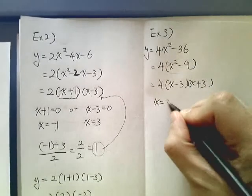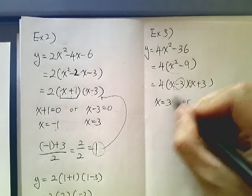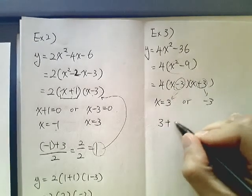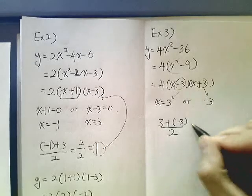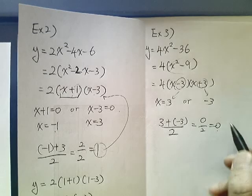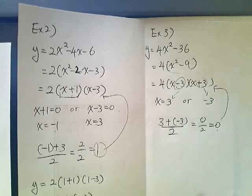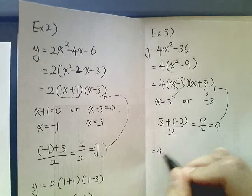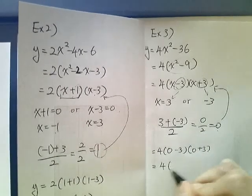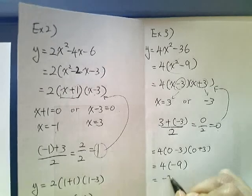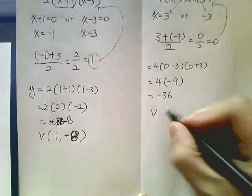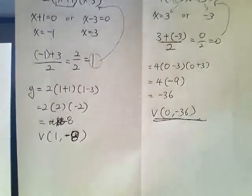So we have x minus 3, x plus 3. So then the x-intercepts are positive 3 or negative 3. Opposite of the same number. Opposite of the same number. So then we add those two. So 3 plus negative 3 and divide it by 2. And this is 0 over 2, which is 0. So the x-value of the vertex is 0. Then you substitute it in into the factored form. Now which then we will get 0 minus 3, 0 plus 3. So 4 times negative 9, which is negative 36. So the vertex is 0 comma negative 36.